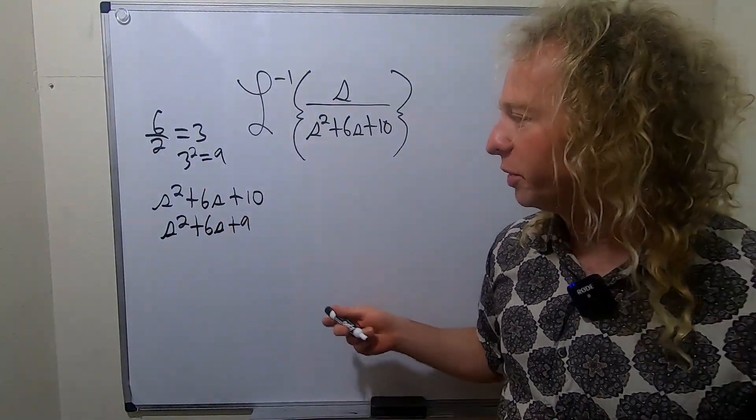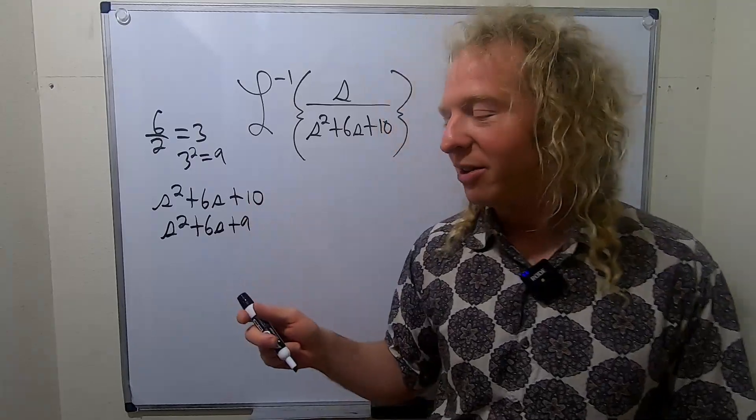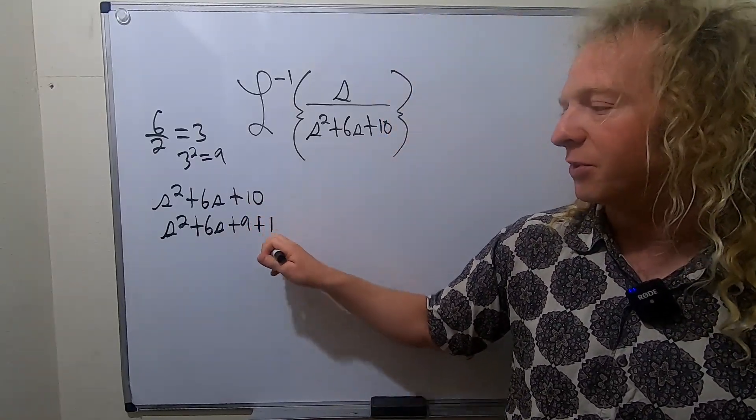So you can't just add a 9. Well, sure we can because we already have a 10. So to get from 9 to 10, we only have to add 1. It's a clever trick.